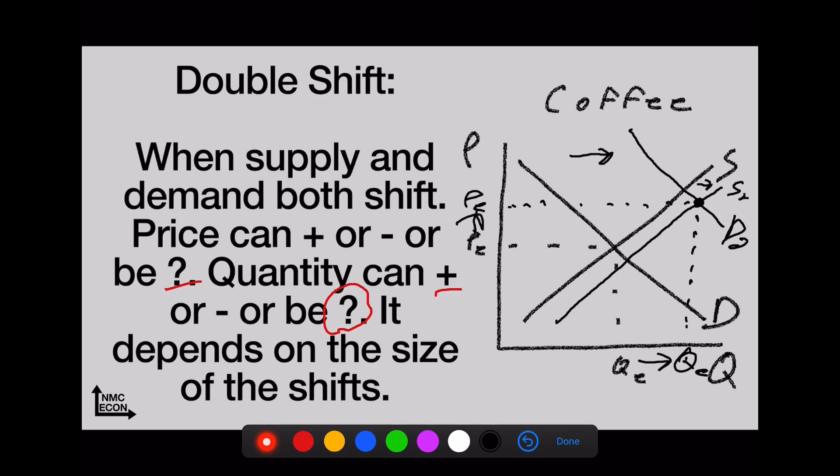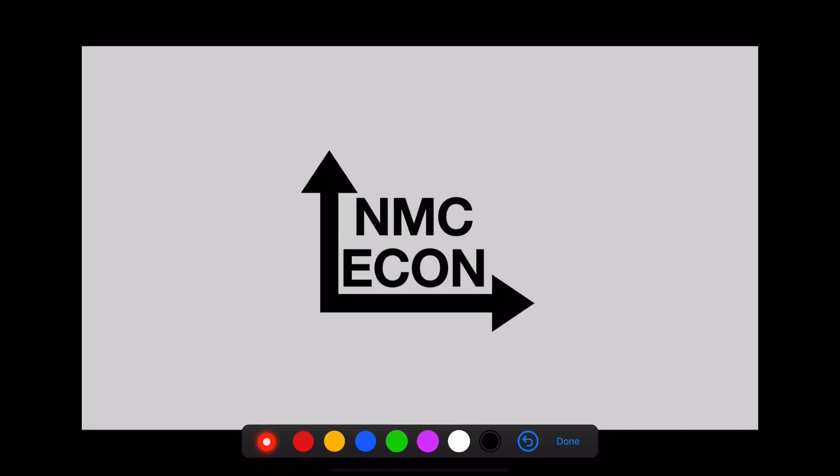So what happened to quantity? Increase in quantity, increase in price. But what if this was the opposite? What if it was a huge supply shift and a small demand shift? Well, in that case, price would have actually gone down, because huge supply, small demand—it would have been over here. What happens in both though? Quantity is definitely increasing, so we can guarantee quantity will increase. We're not so sure about price. Price is indeterminate, but quantity will increase. Okay, that's it guys. Thanks for watching.